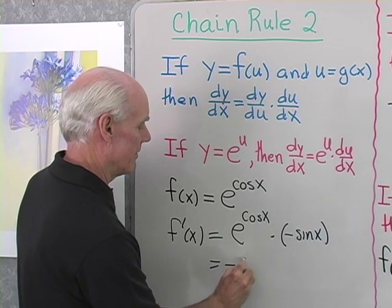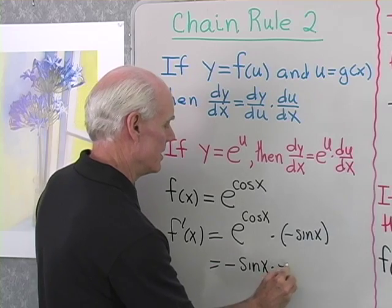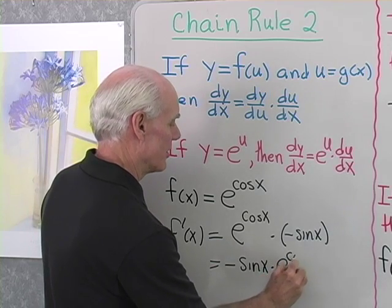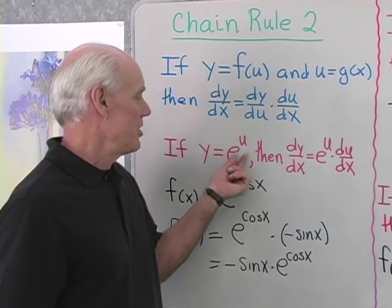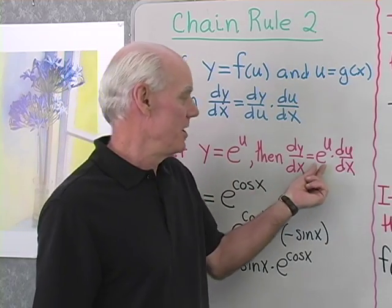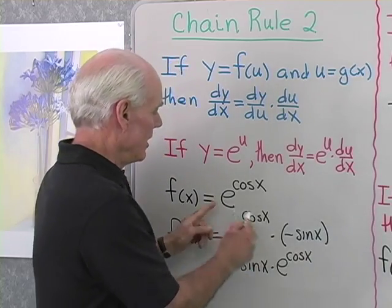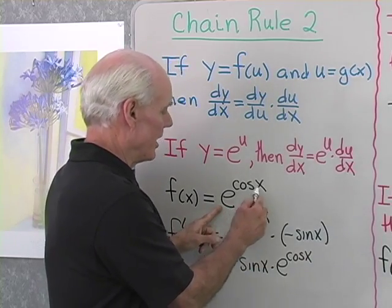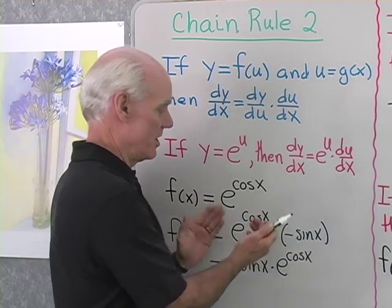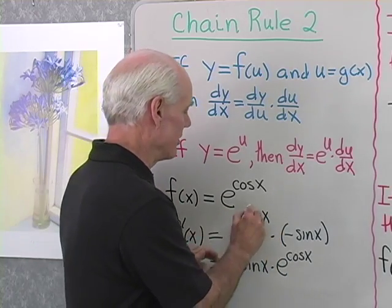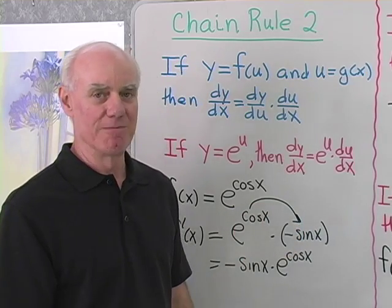So I end up with negative sine x times e to the cosine x. The derivative of e to the u is e to the u times du/dx. So e to the cosine x, when I differentiate, I get e to the cosine x, then I have to differentiate the cosine to give me negative sine.